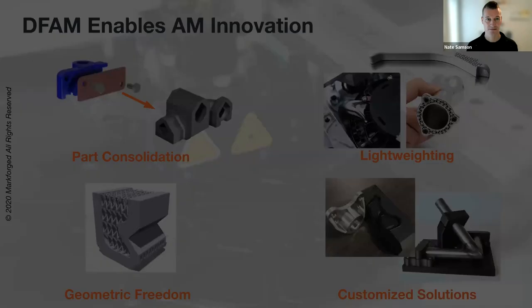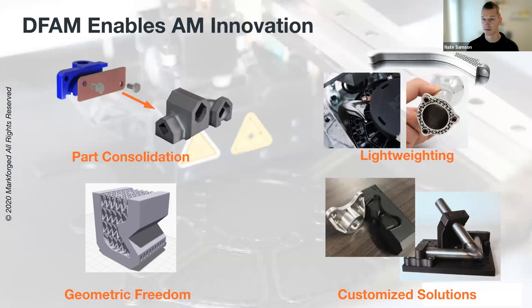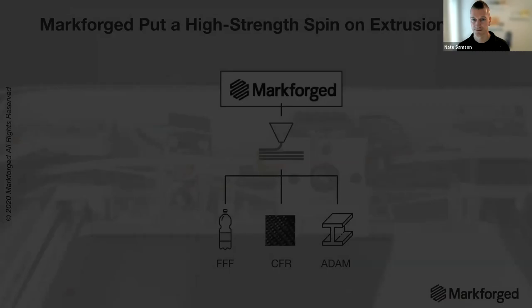DFAM enables innovation. There's so much that can be done with additive that can't be done otherwise — for example, taking a four-part assembly with a casting, sheet metal stamping, some hardware, and turning that into a single component produced with additive. You can lightweight parts using low-density infill on our metal technology, replace metal with our high-strength composite material, produce internal channels or geometries that would otherwise be cost-prohibitive, and create customized low-volume one-off solutions like conformal workholding.